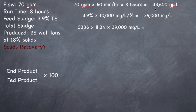Converting to MGD gives 0.0336 MGD. Then 0.0336 MGD times 8.34 times 39,000 milligrams per liter equals 10,929 pounds fed. This number assumes the cake is 100% dry — if you spread this cake out and removed all the water, you would have 10,929 pounds fed for the whole day, 100% dry.